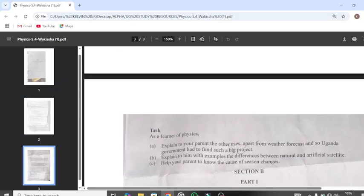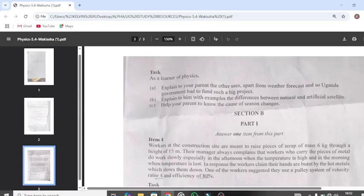As a learner of physics, Part A: explain to your parent the other uses apart from weather forecast that Uganda government had to fund such a big project. Explain to him with examples the difference between natural and artificial satellite. Part C: help your parent to know the cause of seasonal changes. Those were the three items that came from Section A.